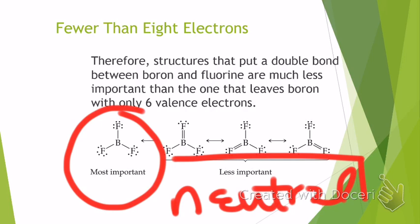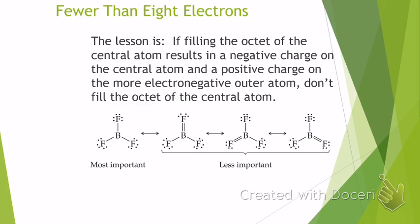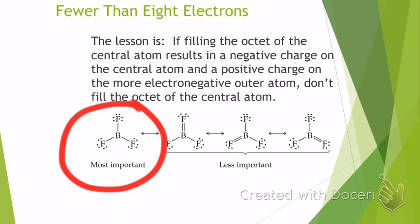So it's alright to violate the octet rule and have fewer than eight electrons, provided that the Lewis structure you draw allows for a structure that is completely neutral — that is, all of the atoms don't have a formal charge; the formal charge is all zero. You especially see this with boron, or possibly with aluminum.